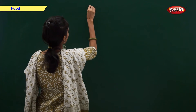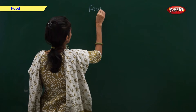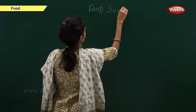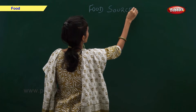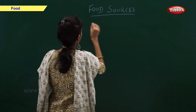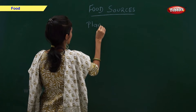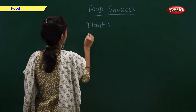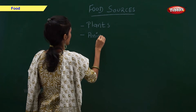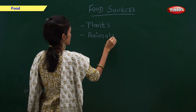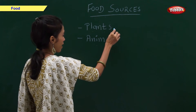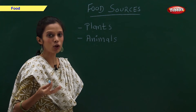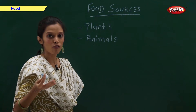There are many kinds of food. We get food from plants and animals. Our food sources are plants and animals. Now, let us have a look at them one by one in detail.